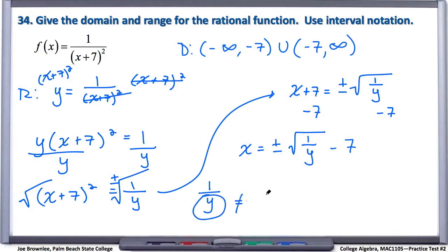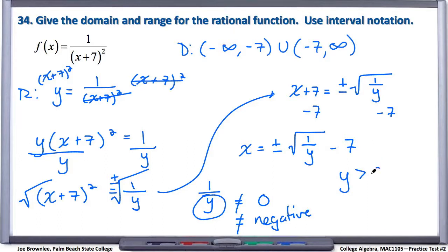So y cannot be 0 and y cannot be negative — meaning y has to be greater than 0. Y greater than 0 covers both restrictions: y can't be 0 and it can't be negative. Based on this, we can write the range as from 0 to infinity, not including 0. This precludes the range from being negative and also excludes 0, as indicated by the parenthesis.